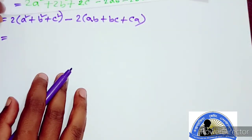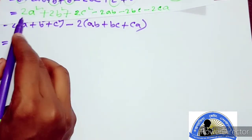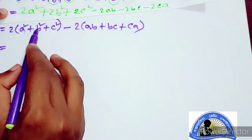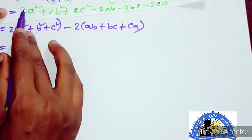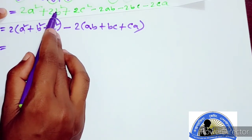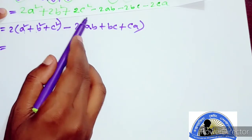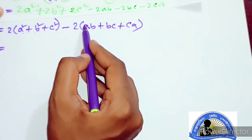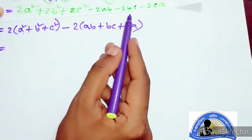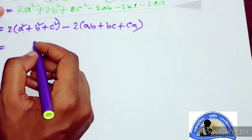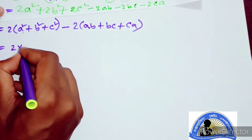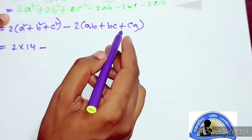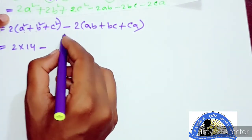Again, as we've already established, we have 2 into a squared plus b squared plus c squared minus 2 into ab plus bc plus ca. So the value is 2 into a squared plus b squared plus c squared minus ab plus bc plus ca, which we computed as 2 into 14 minus 22. We can write 14 into 2, that is 28 minus 22 equals 6.